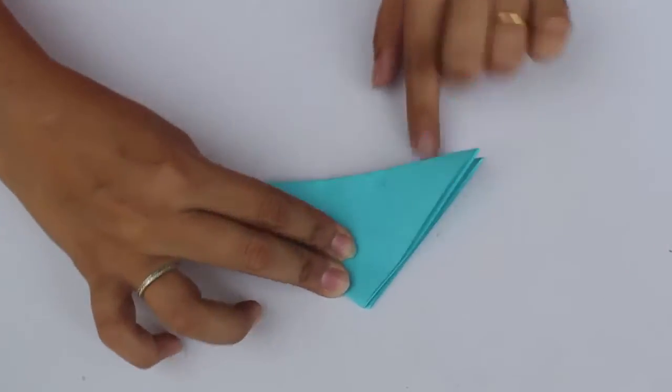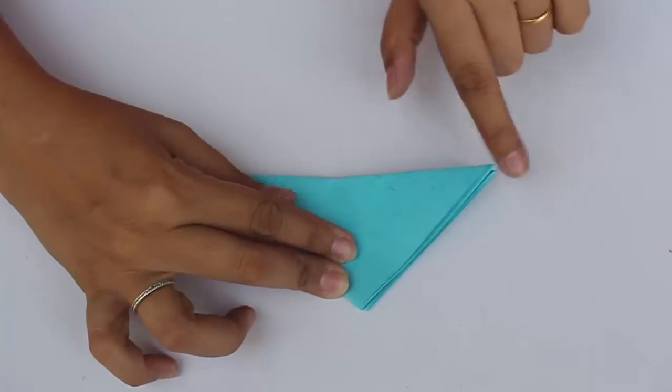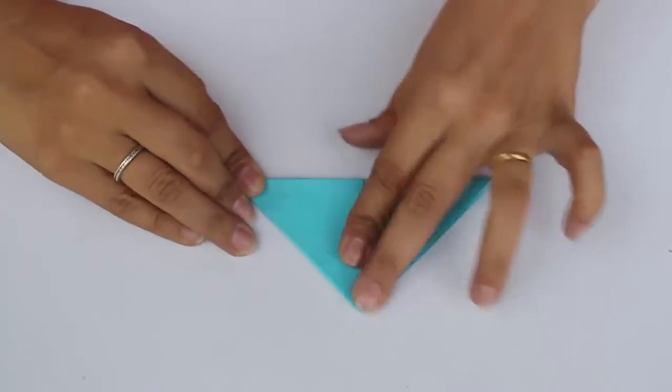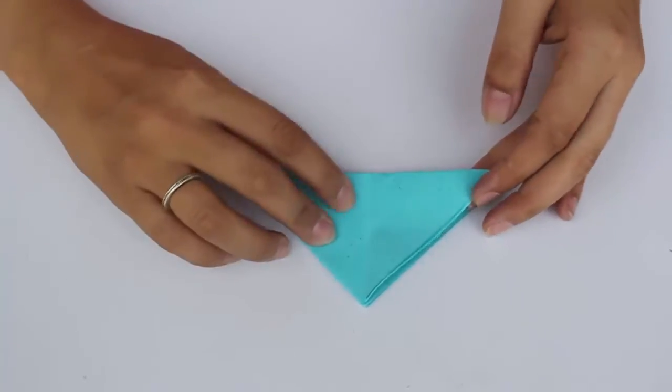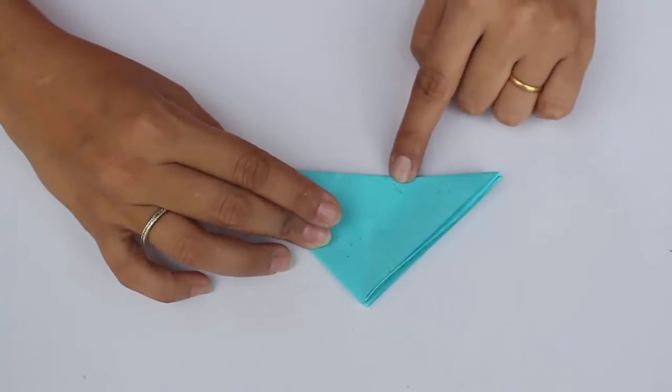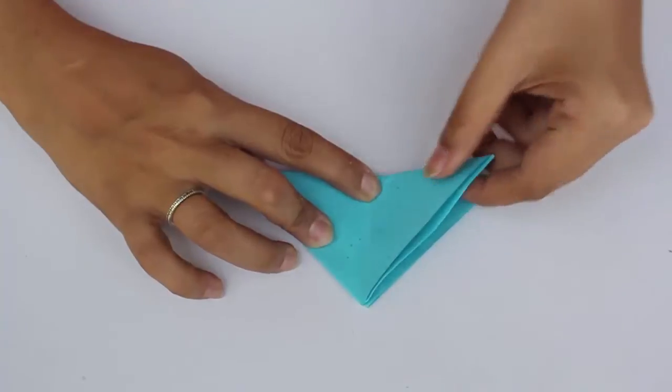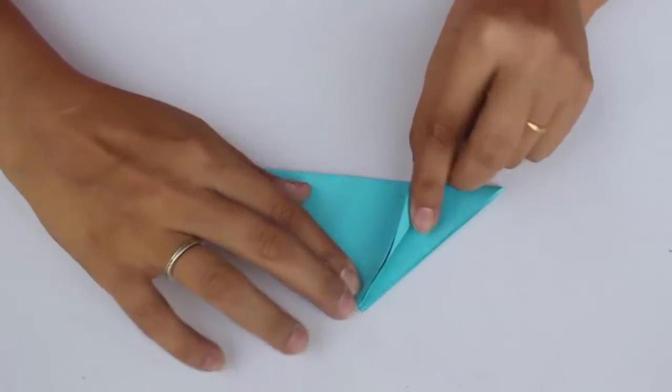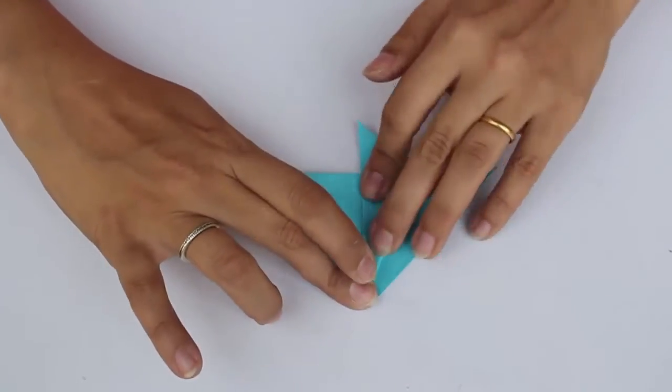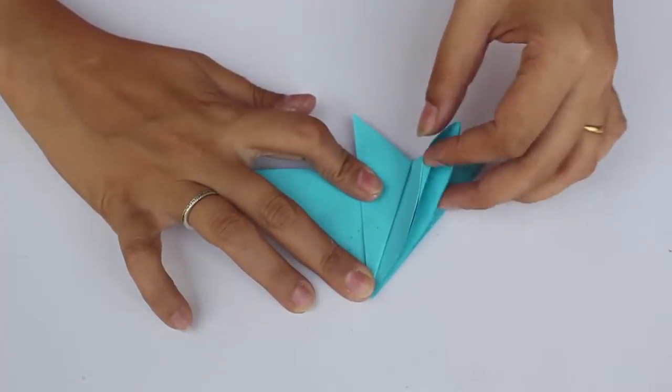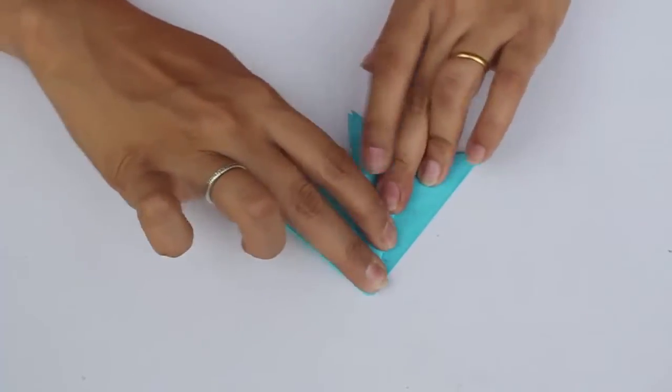Fold the first flap towards the right on this hypotenuse now like this. Fold and unfold. Now keeping the direction of the paper the same, get this edge of the right-angle triangle to meet the central line over here like this. Get the second flap also to fold on this edge like this.